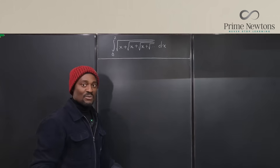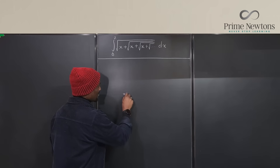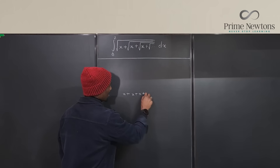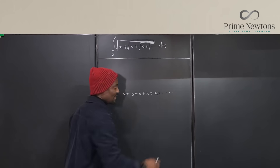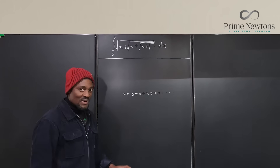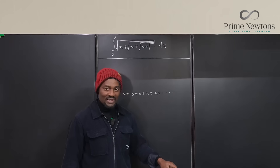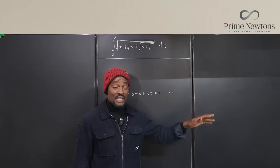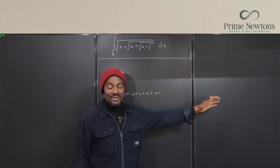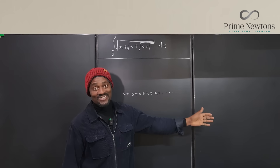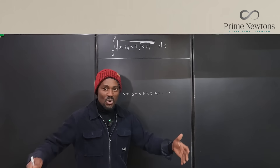Anytime you're dealing with nested radicals, consider: if you have x plus x plus x plus x going on forever, what is the total? The sum of all these x's going to infinity is infinite — positive infinity if x is positive, negative infinity if x is negative, since a negative number plus a negative number keeps getting more and more negative.